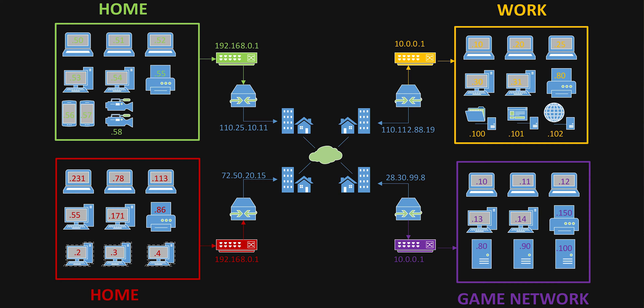From there you'd set up a port forwarding rule. Say you wanted to print to your work from home — you'd set up a port forwarding rule pointing an external port, let's say port 3000, to 10.0.0.80 on port 3000. But what if you had more than one printer? You can't set up multiple port forwarding rules all pointing to port 3000 for three different printers. So on the external port you'd change it to translate to 3001 or 3002 — that's how you'd reach your other printers. From home you'd connect to 110.112.88.19 on port 3000, 3001, or 3002.